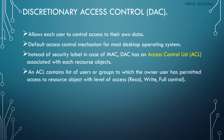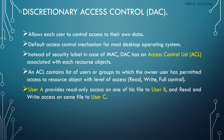An ACL contains a list of users or groups to which the owner has permitted access to a resource object, along with the level of access — read, write, or full control. For example, user A may provide read-only access on a file to user B, and read-and-write access on the same file to user C. DAC provides a more flexible environment than mandatory access control.